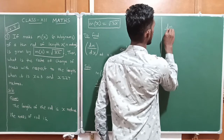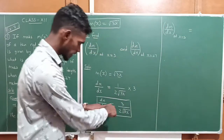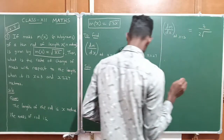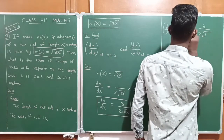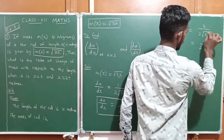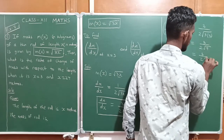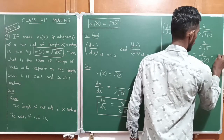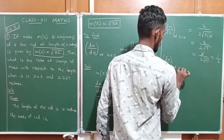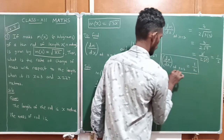Now find dm/dx at x = 3. Substituting x = 3 into the function: 3 divided by 2 into √(3×3) = 3 divided by 2 into √9 = 3 divided by 2 into 3. The 3s cancel, giving 1/2. So dm/dx at x = 3 is equal to 1/2. This is the first solution.